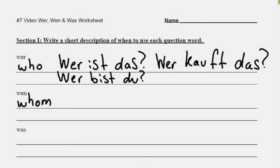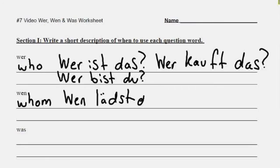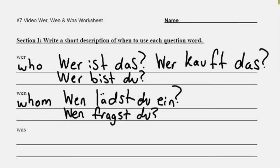For another example: wer kauft das? — Who is buying that? If you change 'who is buying that' to 'he is buying that,' that makes sense. If you say 'him is buying that,' you're probably three years old. So wen, or 'whom,' is used with the accusative case. You can say things like wen lädst du ein? — Whom are you inviting? Or wen fragst du? — Whom are you asking? Him — whom. Both end in -im.